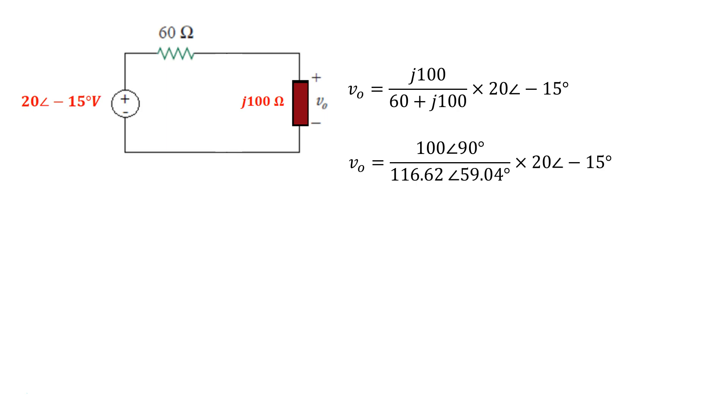Now I have complex number in polar domain throughout. So this complex number is divided by another complex number and multiplied by another complex number. So in this case, the magnitudes act up just like this. So 100 divided by 116.62 times 20 is the overall magnitude.